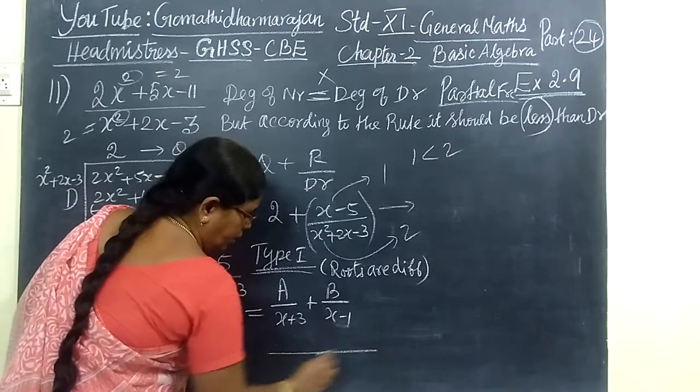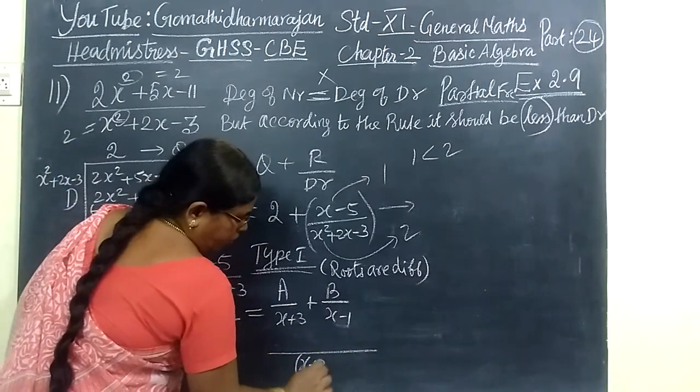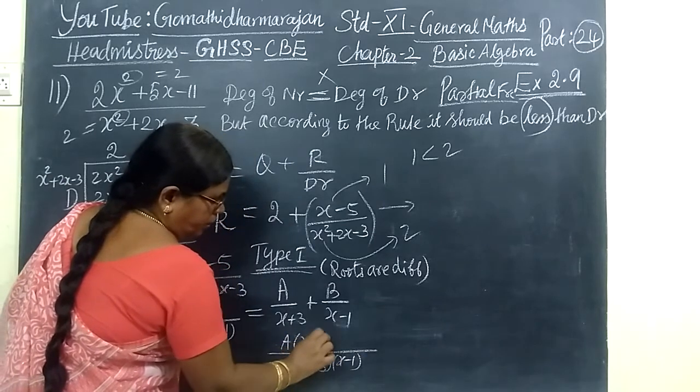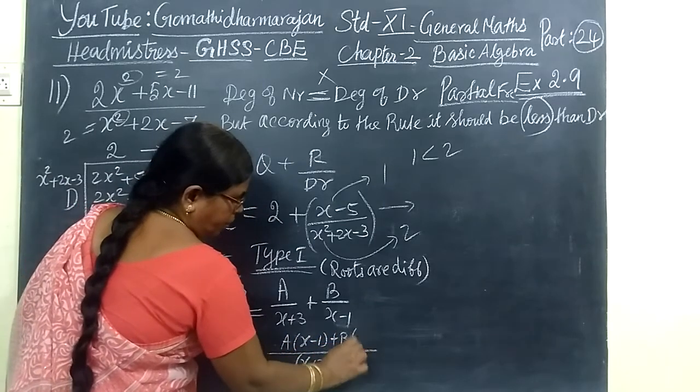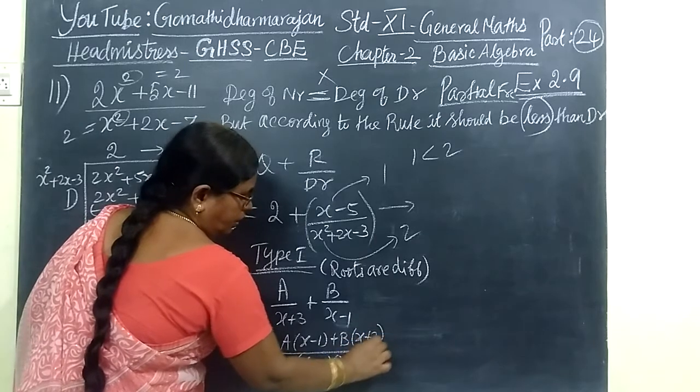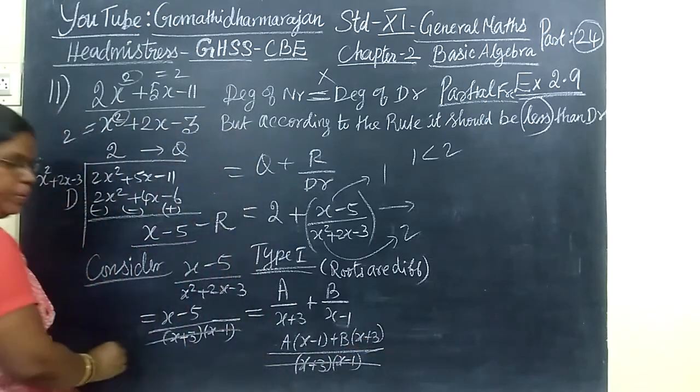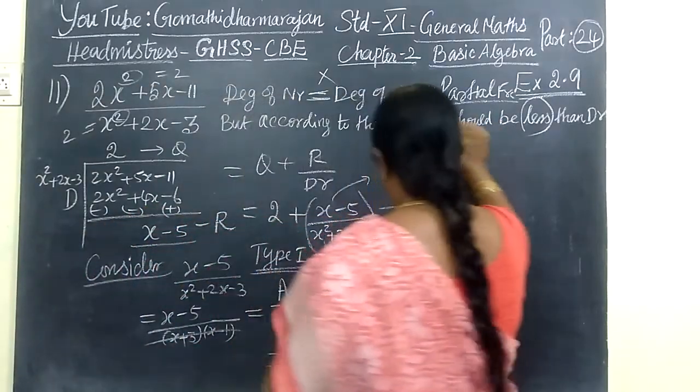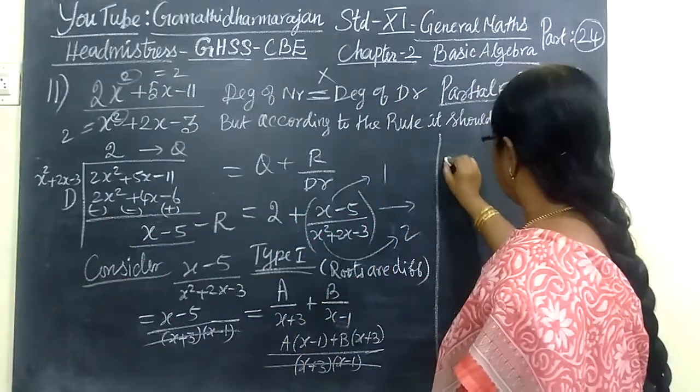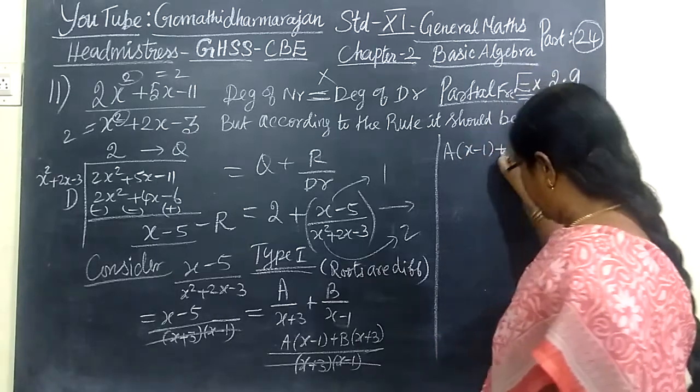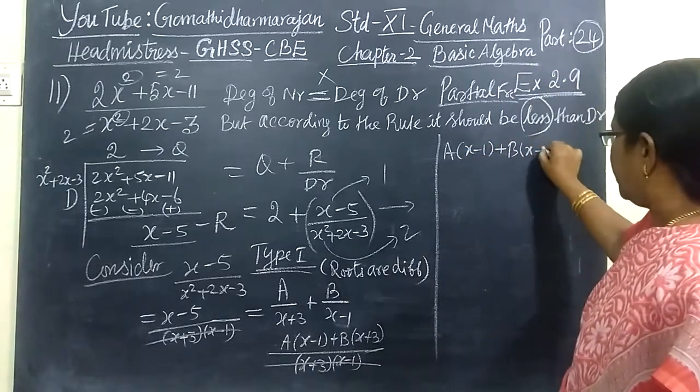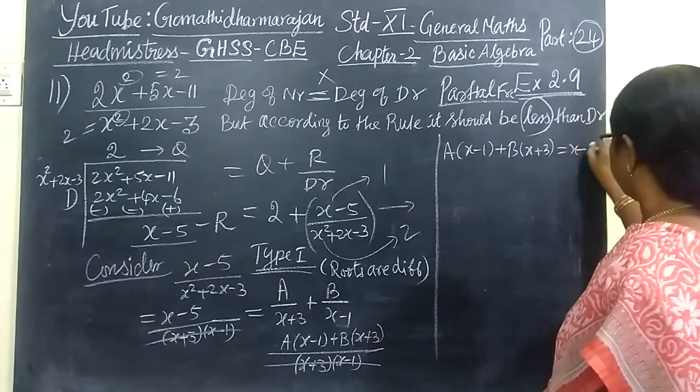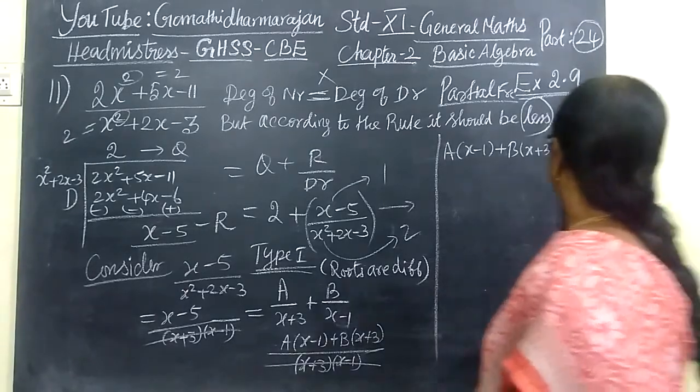That is one constant by one factor plus another constant by another factor. Now you take the LCM. So X plus 3, X minus 1. So A bracket X minus 1, B bracket X plus 3, equal to X minus 5.